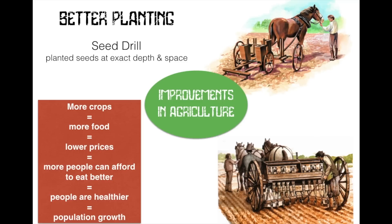One of the things we need to understand is that prior to the Industrial Revolution, farming improved through technology and better techniques. One key piece of technology is the seed drill, invented by Jethro Tull in England in 1700, which allowed crops to be planted more efficiently and scientifically. This leads to more crops, more food, lower prices, better diets, healthier people, and a rise in population.